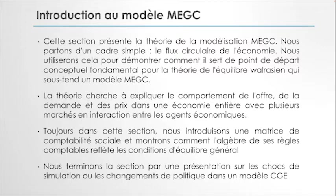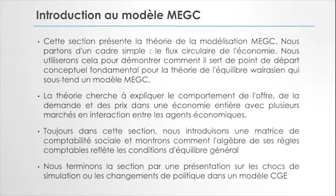Dans cette théorie, nous cherchons à expliquer le comportement de l'offre et de la demande et des prix dans une économie entière avec plusieurs marchés ou plusieurs secteurs qui sont en interaction, permettant aux agents d'interagir entre eux. Nous allons aussi présenter la matrice de comptabilité sociale et montrer comment des développements algébriques permettent de refléter les conditions d'équilibre général, et présenter des simulations ou des changements de politiques dans le modèle d'équilibre général calculable.